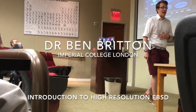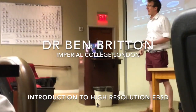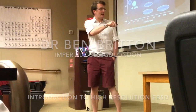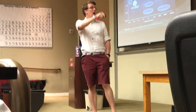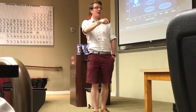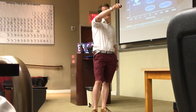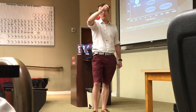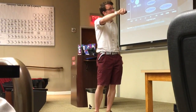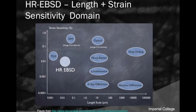So where does the high resolution EBSD technique fit within our strain measurement landscape? If we take an axis of length scale and an axis of strain sensitivity, in an ideal world we would like a technique that maps across all length scales with very good strain sensitivity. Unfortunately we don't have that magic technique. High-res EBSD spans a relatively reasonable length scale, depending on your probe size and how big you map.